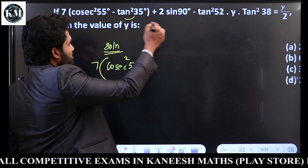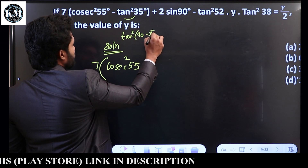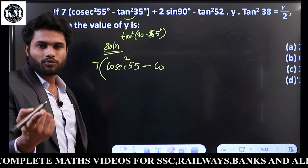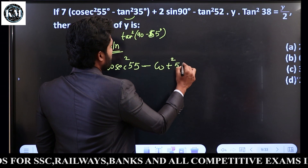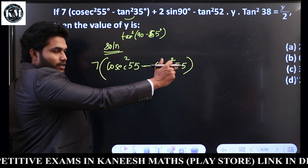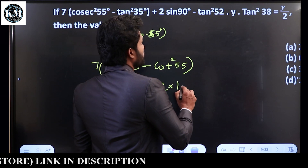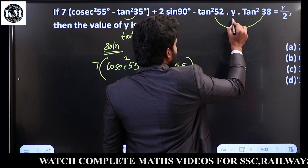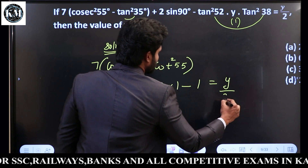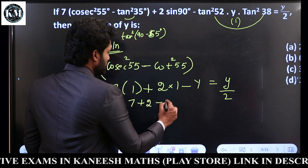Tan² 35 — using Sin(90−θ) and Tan(90−θ) equals Cot θ rules. Tan(90−55) equals Cot 55. So Tan²θ minus Cot²θ equals 1. Then 2 Sin 90 equals 2. And Tan² 52 × Tan² 38 — since 52 + 38 = 90, Tan A × Tan B equals 1. So 1 is equal to y by 2.